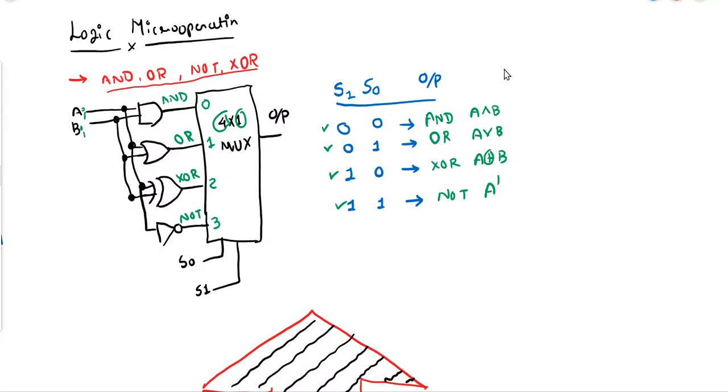Now here we have considered only four micro operations. If we want to go with eight micro operations or sixteen micro operations, then accordingly we have to change the size of the multiplexer. For eight, we require 8x1, so we need three-bit selection line. For sixteen, we require 16x1, so we need four-bit selection. It depends on which are the primary logical micro operations, and based on that we can design the digital circuit.